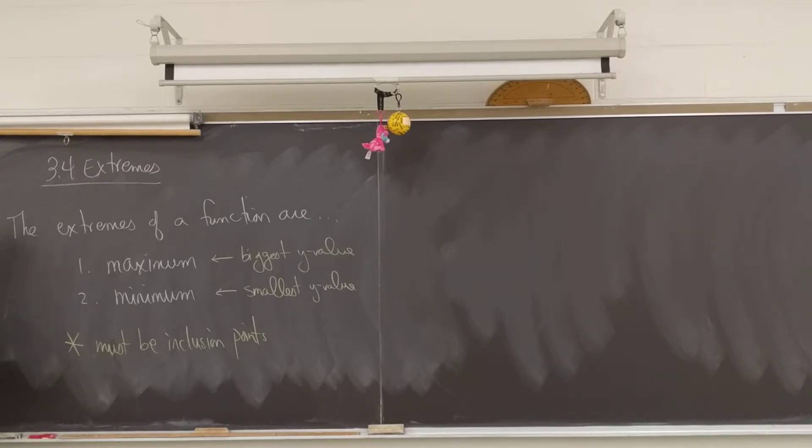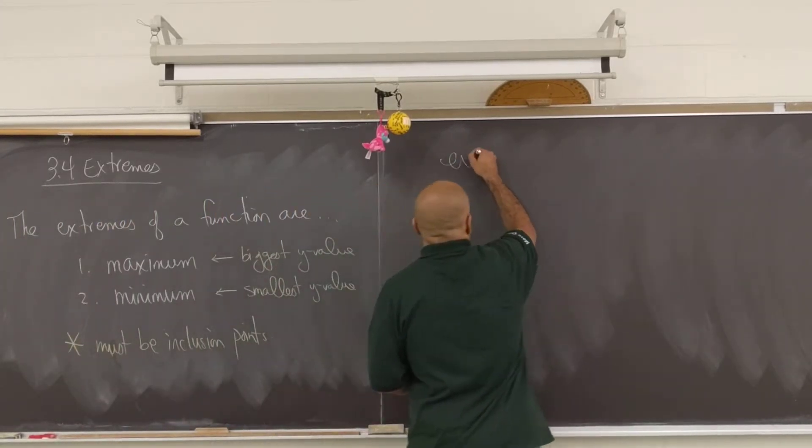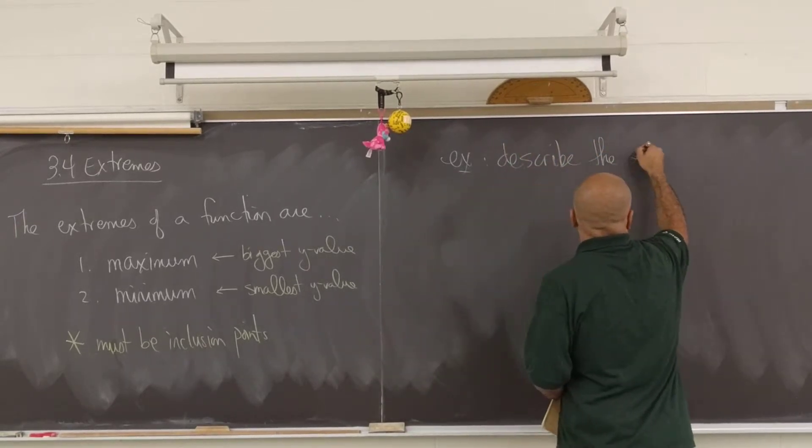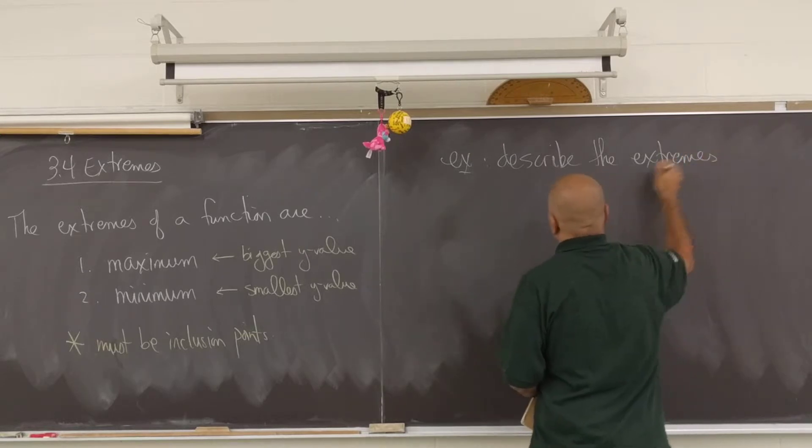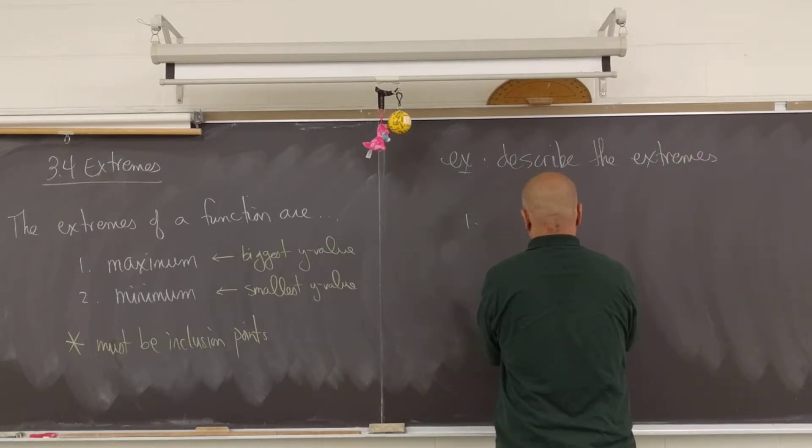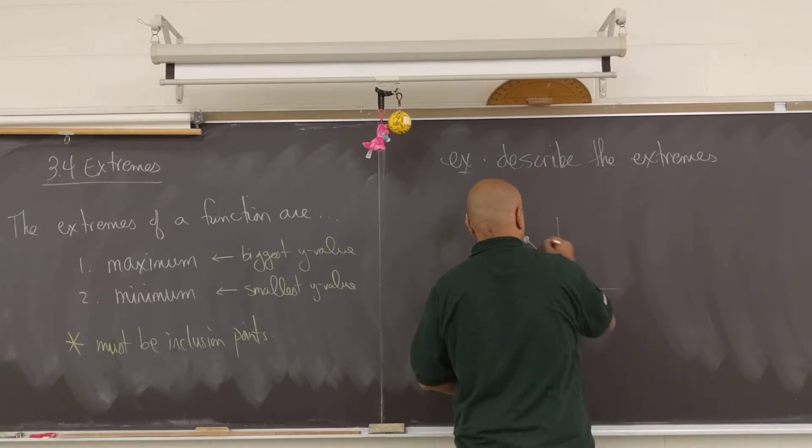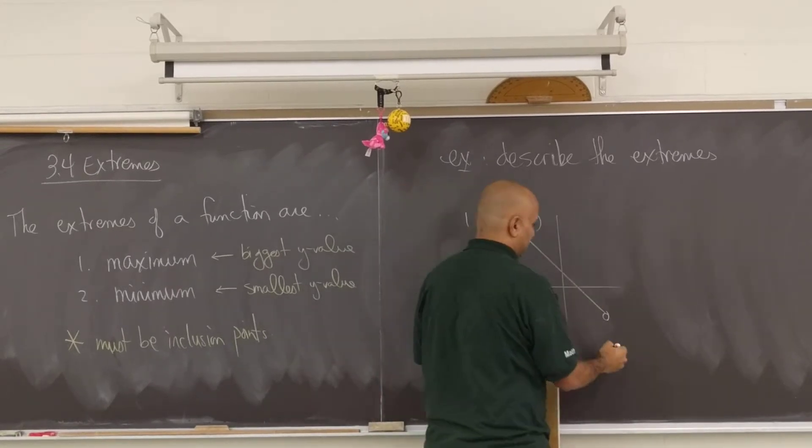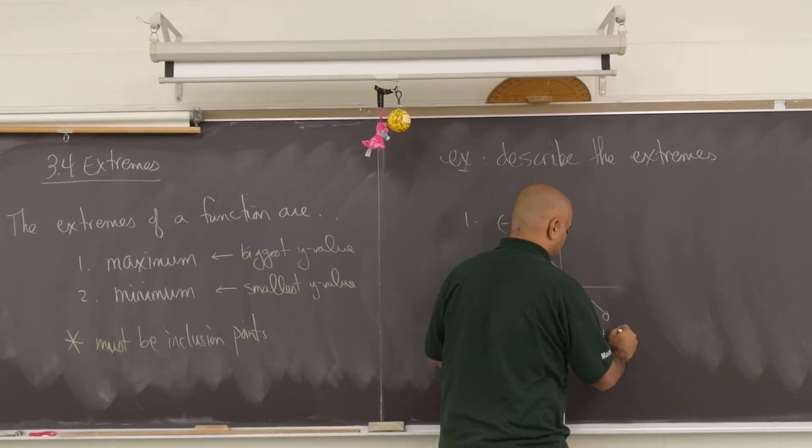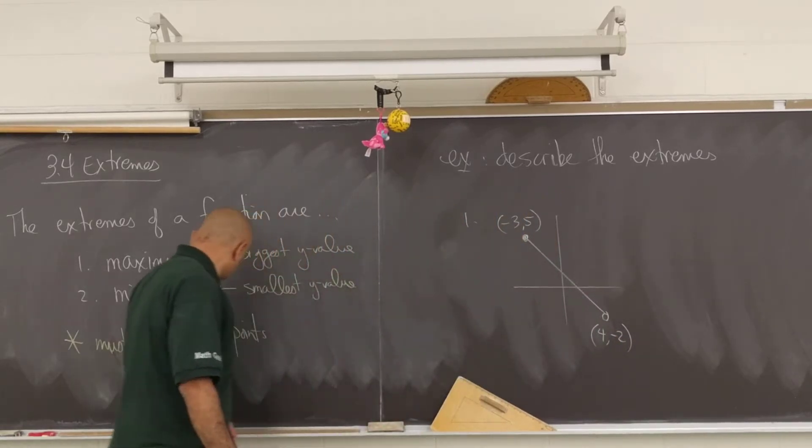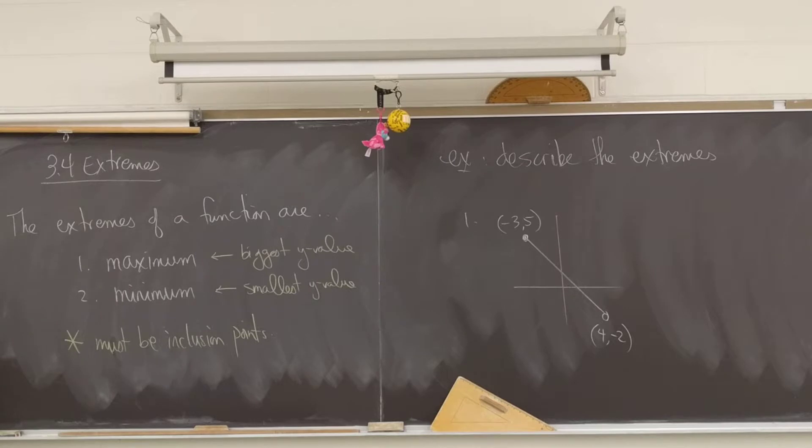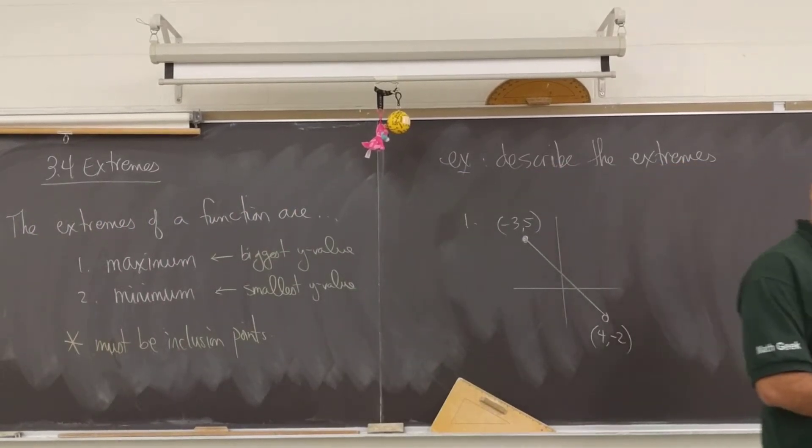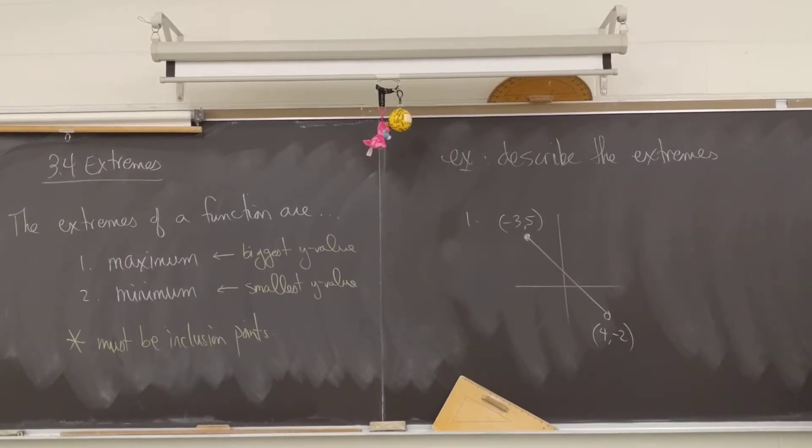You can take care of this in three examples in the overview. Describe the extremes. This point is negative 3 positive 5. This point right here is 4 and negative 2.